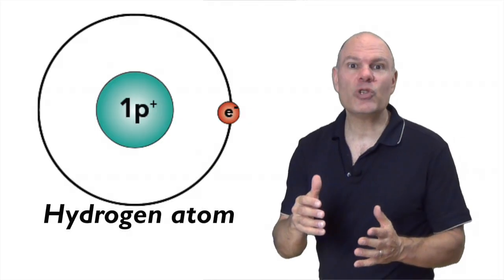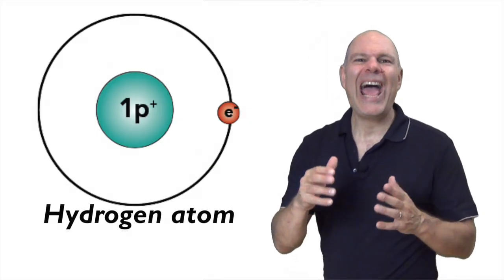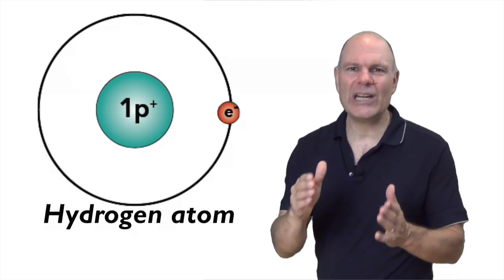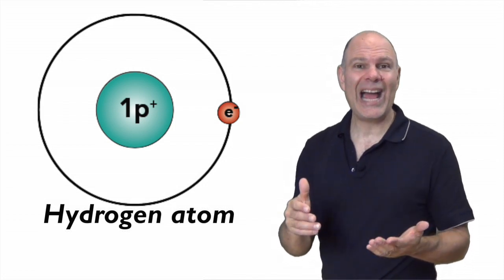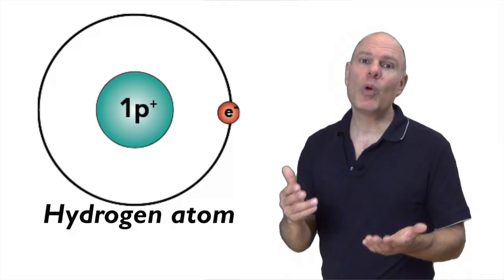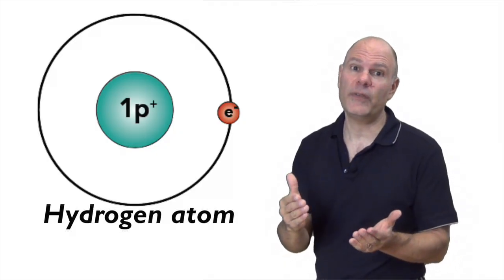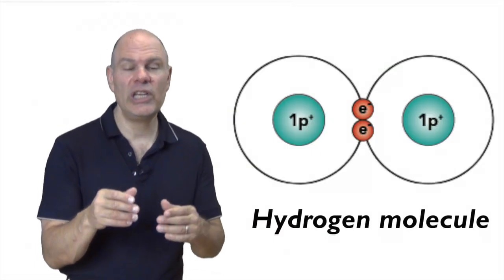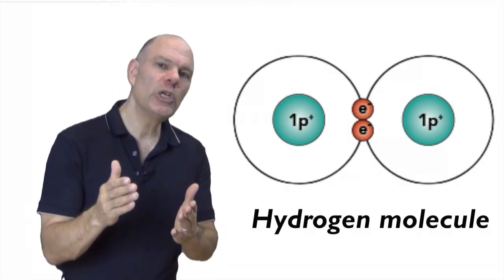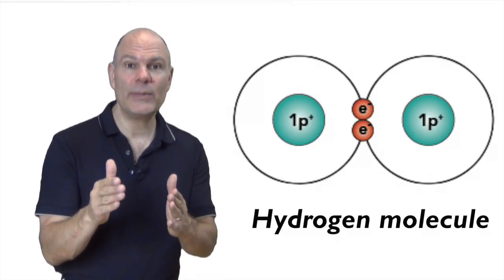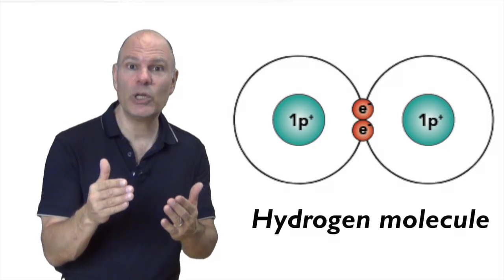How does H2 form? It's all about atomic happiness. A hydrogen atom has one proton and one electron. As a single atom, hydrogen is unhappy because the first energy level has a capacity of two electrons, and hydrogen only has one. By sharing its electrons with another hydrogen atom, hydrogen can achieve an atomic version of happiness. This sharing holds the two atoms together, and that is exactly what a covalent bond is.